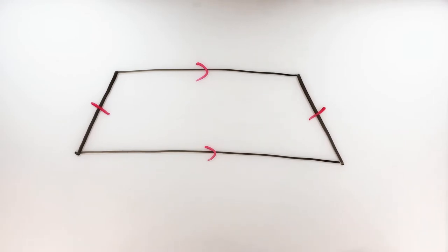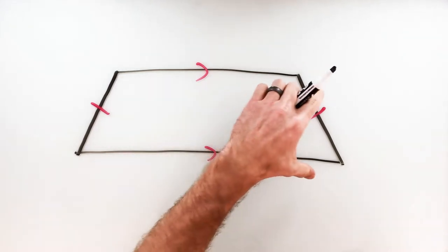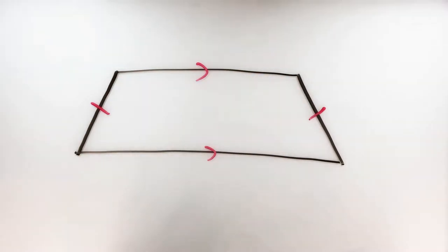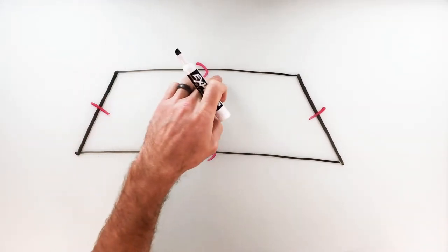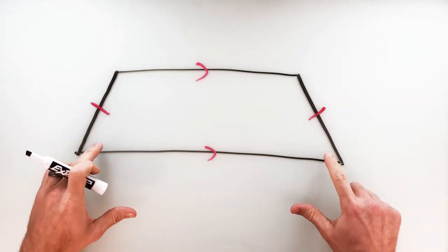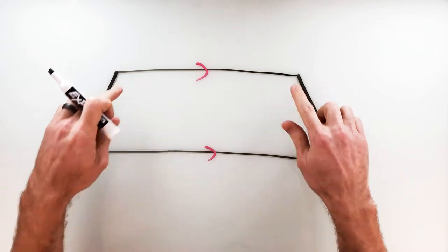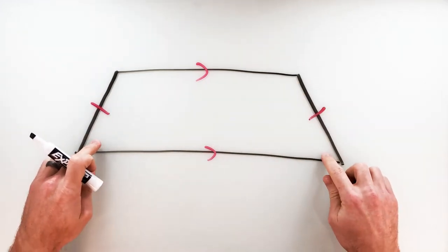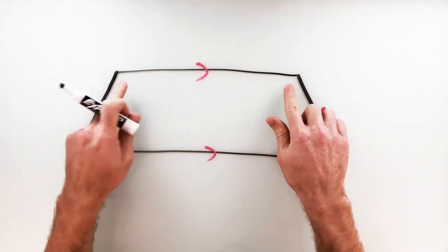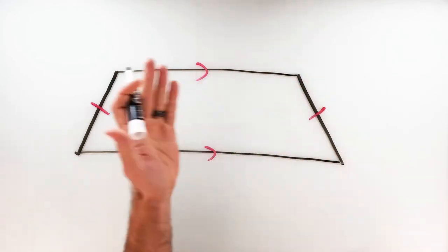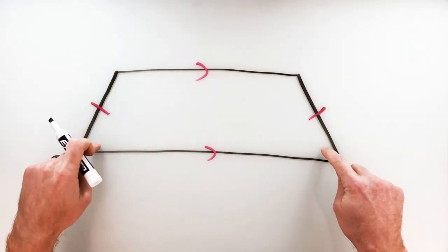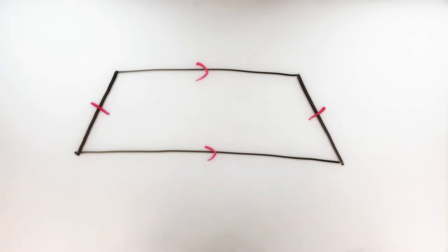The first property we're going to talk about with the isosceles trapezoid is that the base angles are congruent to one another. The bases of a trapezoid are the two parallel sides, so the base angles are the two angles that lie on each base. These two would be a pair of base angles, and these two would be a pair of base angles. It might seem obvious because you have a line of symmetry right down the middle that you could reflect this over onto itself and those pairs of angles would match up, making them congruent, but we're going to prove it in a different way.